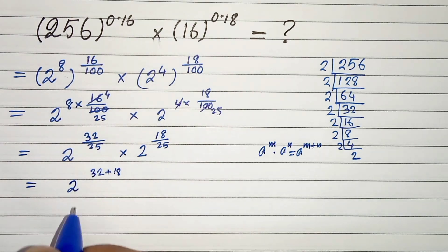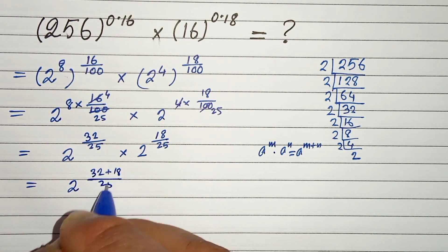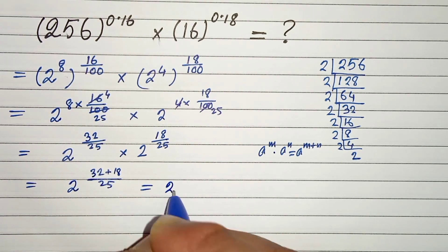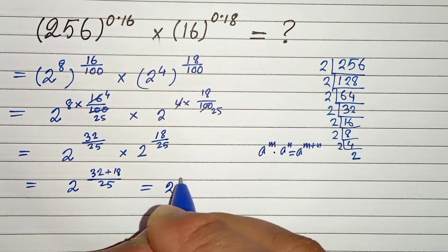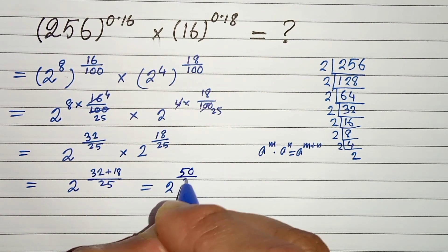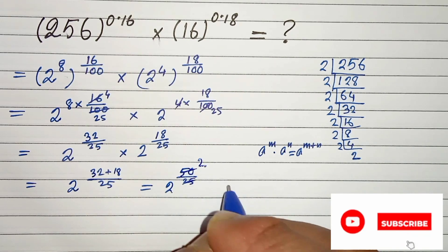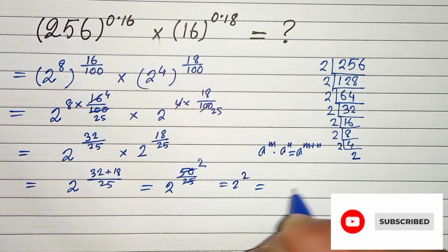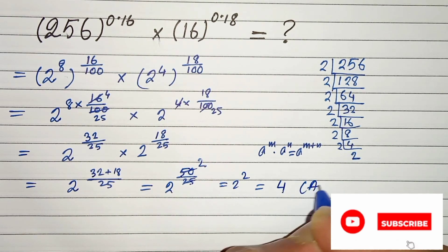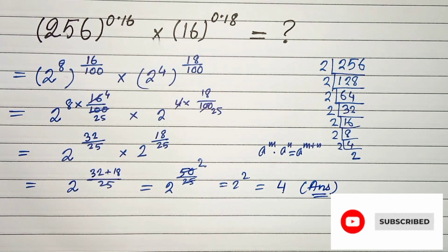Which is equals to 2 to the power 32 plus 18 is 50, divided by 25. So we will get 2 squared, which is equals to 4. This is our solution. Thanks for watching.